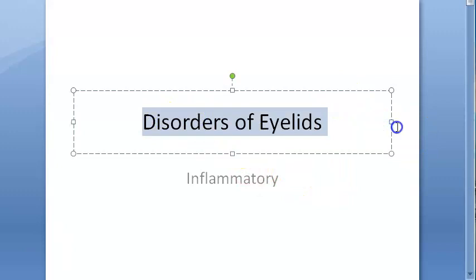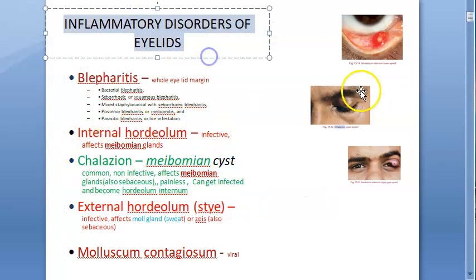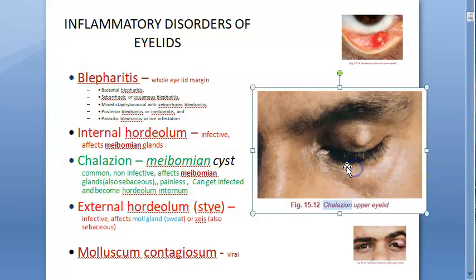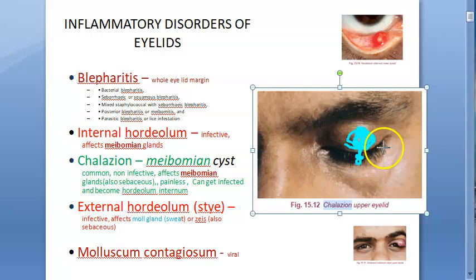In this video we want to look at chalazion. Chalazion is an inflammatory disorder of the eyelid. It is a non-infective, painless condition and very common. What is affected is the meibomian gland — the duct gets blocked, the secretions stay inside the gland, and this becomes a chalazion. There is no bacteria inside it, hence it is non-infective.